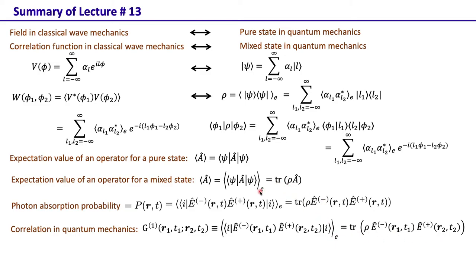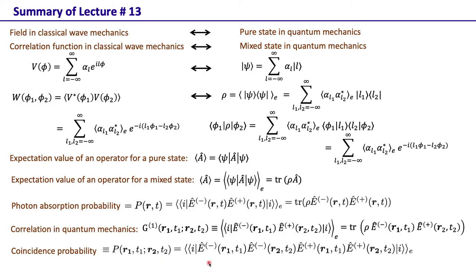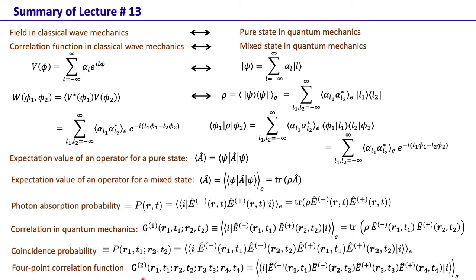In quantum mechanics we can also ask: what is the probability of detecting one photon at (r₁,t₁) and a second photon at (r₂,t₂)? We don't have an analogous question in classical wave mechanics. This quantity is given by E⁻(r₁,t₁) E⁻(r₂,t₂) E⁺(r₂,t₂) E⁺(r₁,t₁) with ensemble average, written as trace of ρ times this operator. With two-photon detection, we can have a four-point correlation function: E⁻(r₁,t₁) E⁻(r₂,t₂) E⁺(r₃,t₃) E⁺(r₄,t₄).